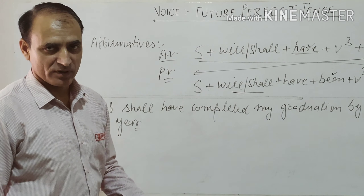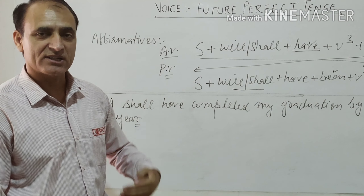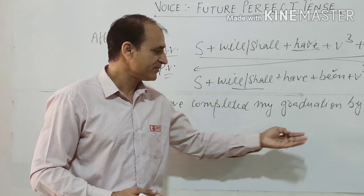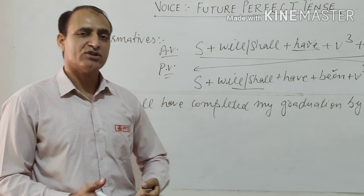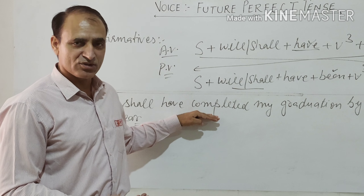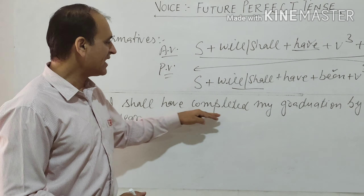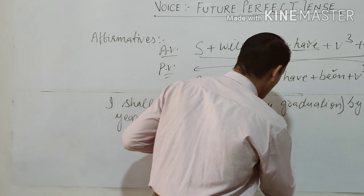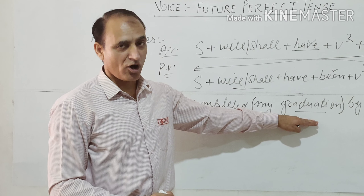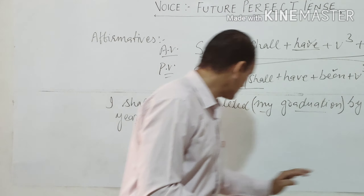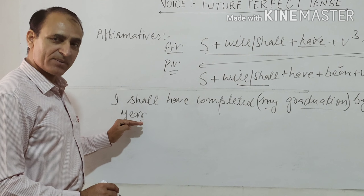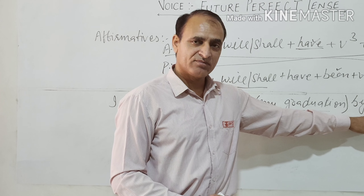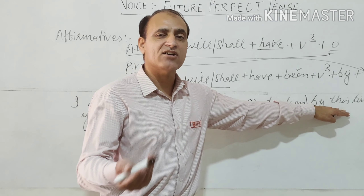Now when we change this into passive voice, we first need to identify the object, because we will start with the object and make it the subject. To find the object, as I told you at the beginning of this series, ask a question using what against the main verb — whatever answer you get is your object. I shall have completed what? My graduation. So my graduation is the object. The remaining part — by this time next year — is a prepositional phrase working as an adverbial of time, so we place it at the end of the passive sentence as well.